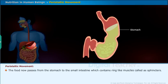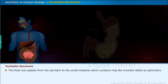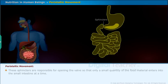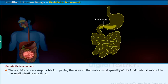The food now passes from the stomach to the small intestine, which contains ring-like muscles called sphincters. These sphincters are responsible for opening the valve so that only a small quantity of the food material enters into the small intestine at a time.